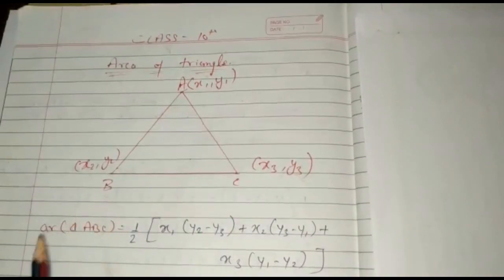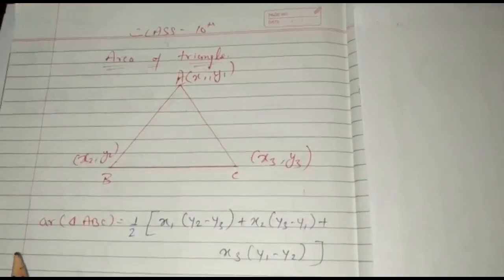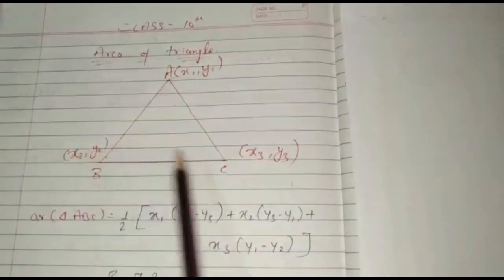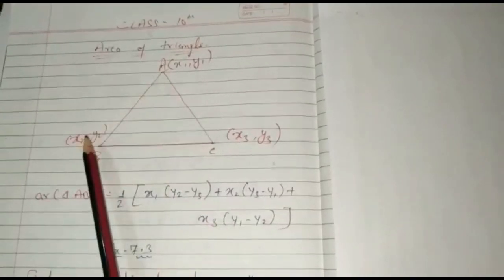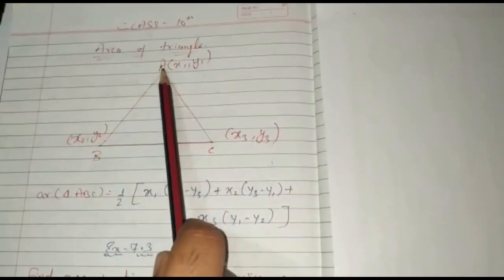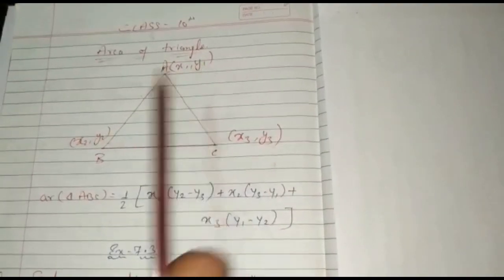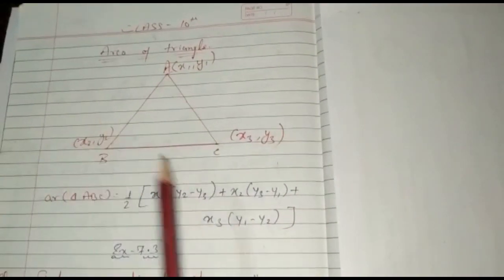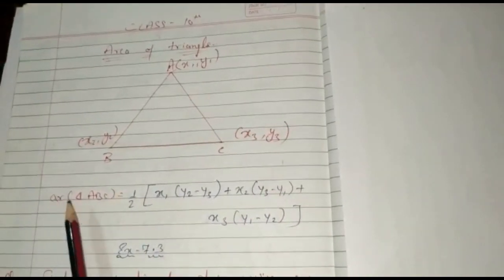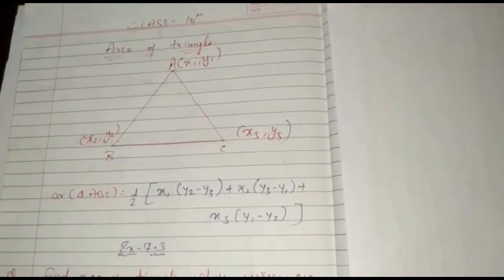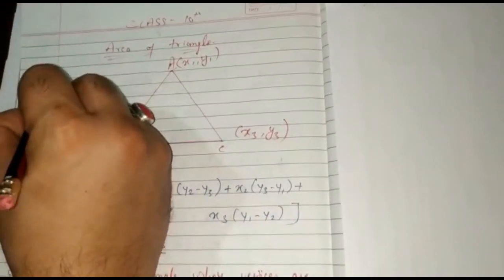First we have to understand the formula for solving these types of problems. Suppose this is a triangle ABC, and the coordinates of each vertex are A, B, and C. The vertex A has coordinates x1 and y1, vertex B has x2, y2, and vertex C has x3, y3. So the formula for area of a triangle will be equal to...